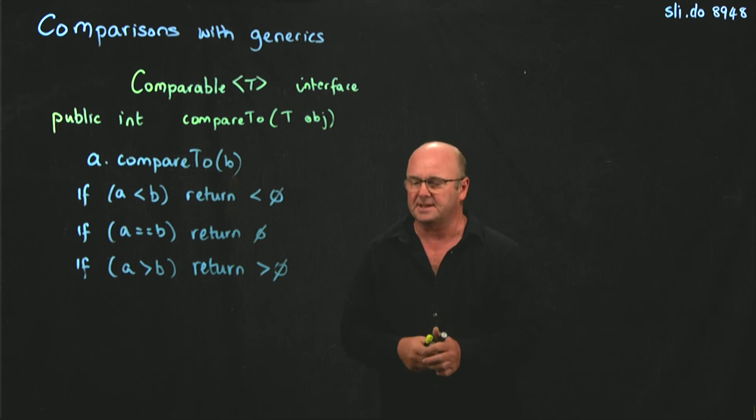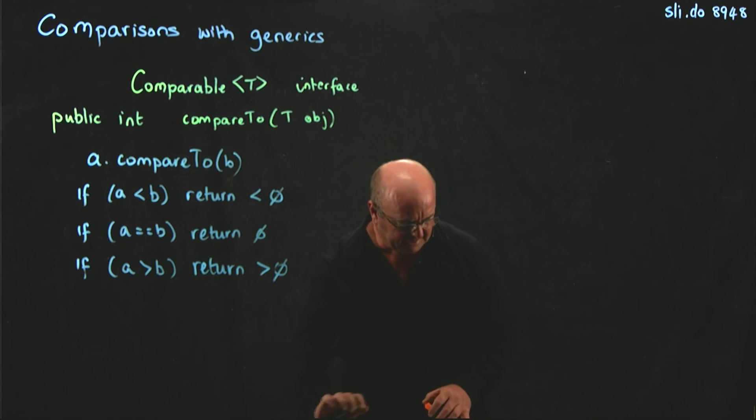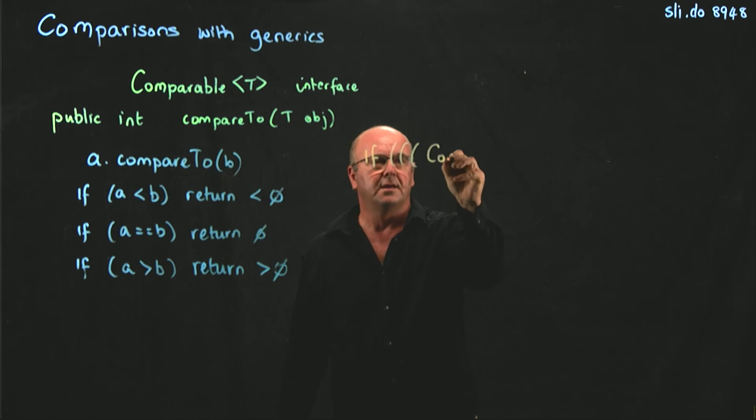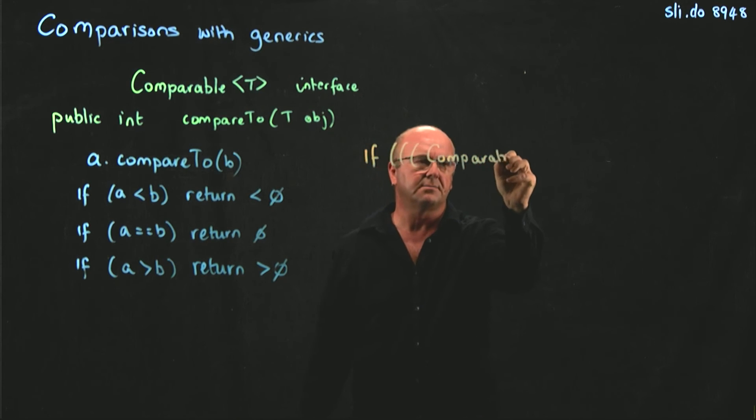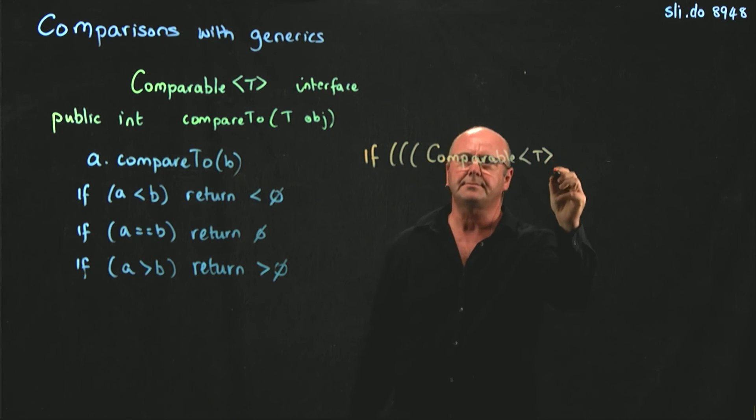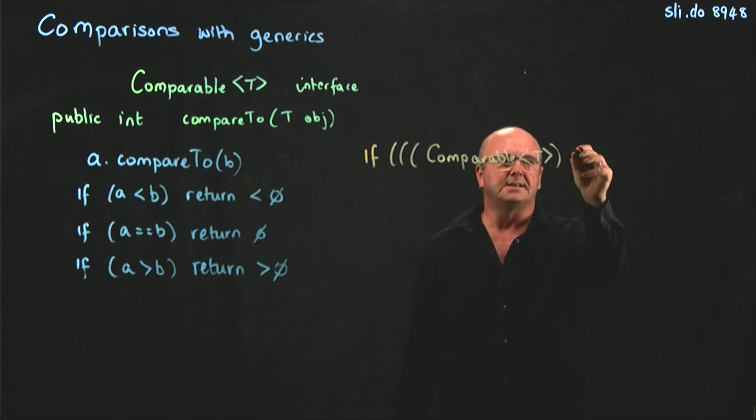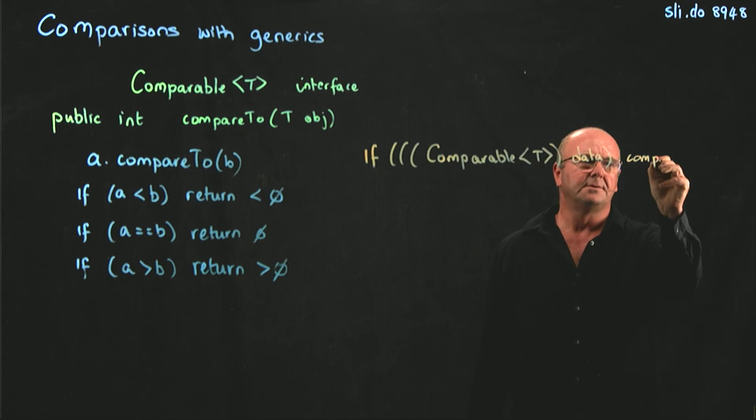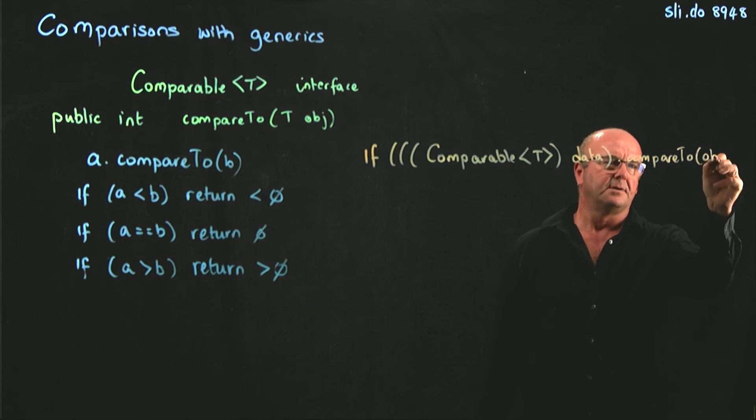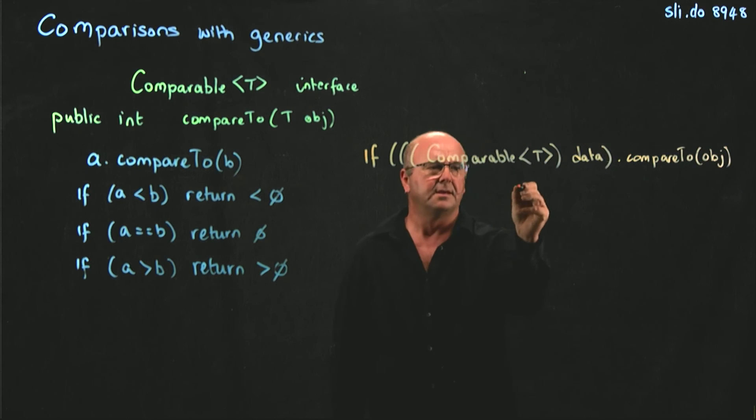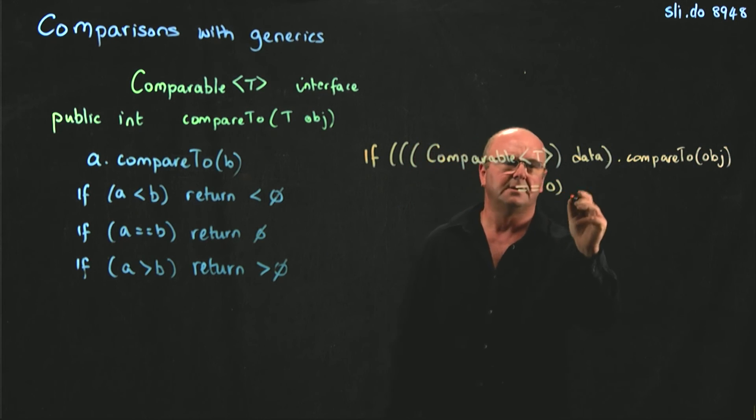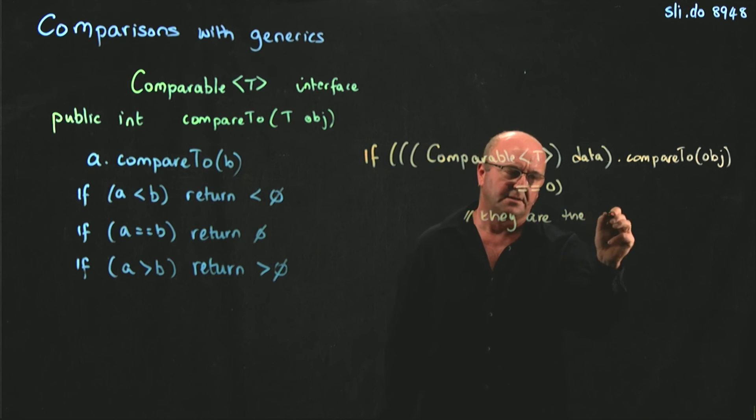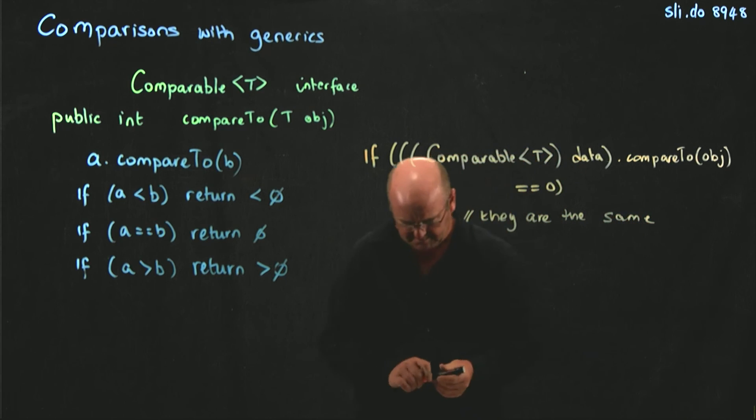And so, the syntax that we use for that is something like this. If, and then we have a cast for data.compareTo object is equal to zero, then they are the same.